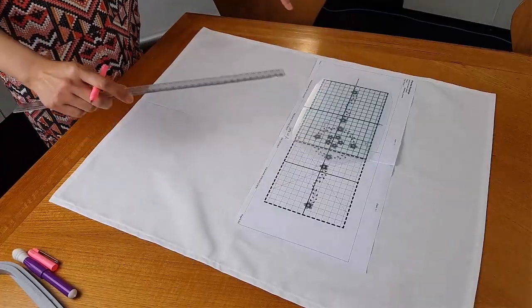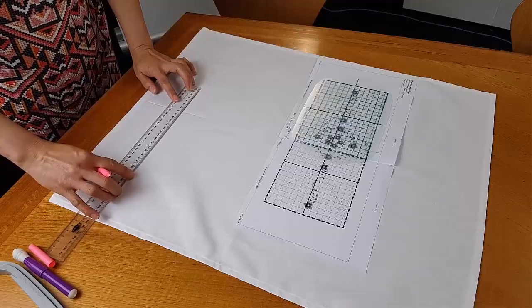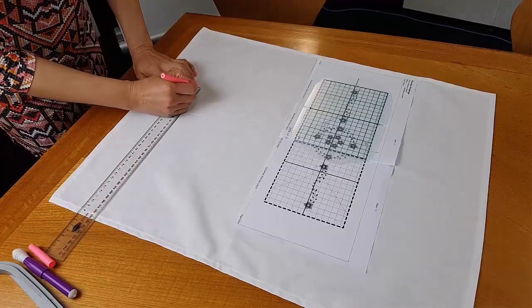Now we can mark the centre of the first hooping. Here it's offset 7cm from the centre of the design.